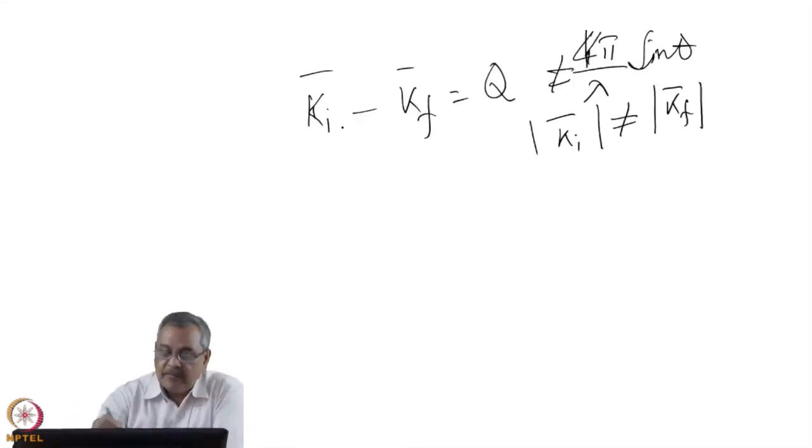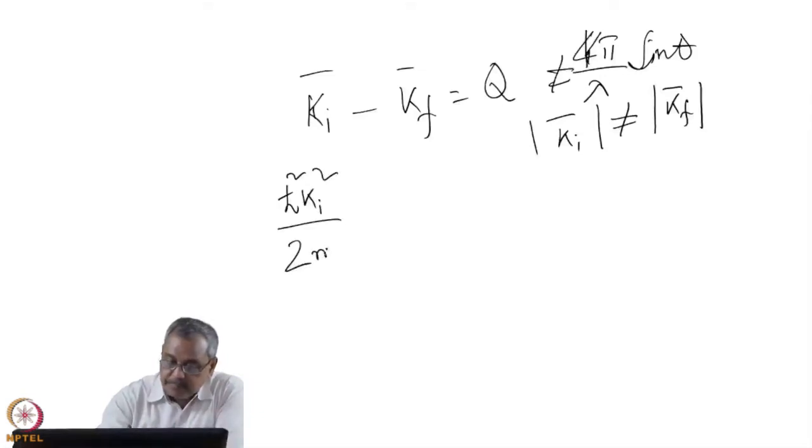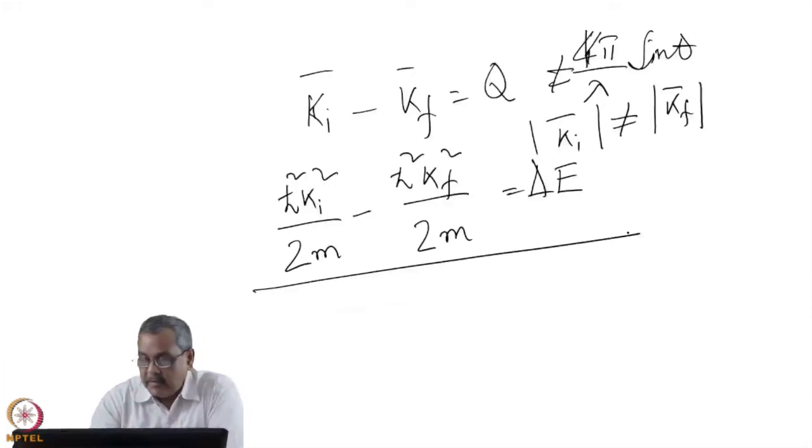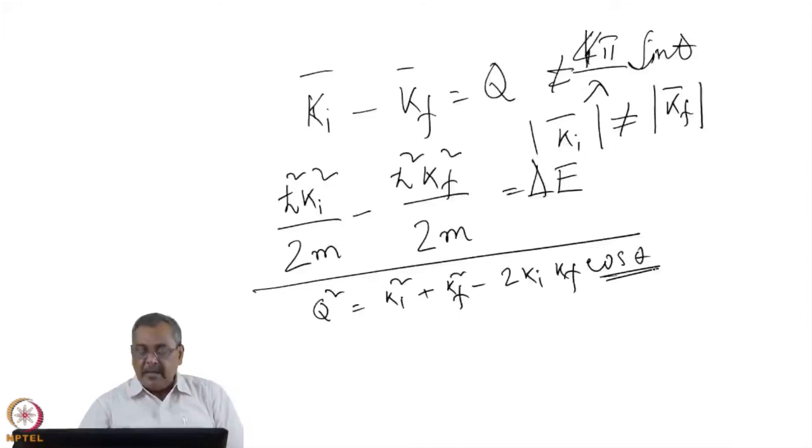This is ki and kf of different lengths, and ℏ²ki²/2m minus ℏ²kf²/2m is the energy difference, the energy transfer in the inelastic experiment. And q² equal to ki² plus kf² minus 2kikf cos θ, these are magnitudes if θ is the angle between ki and kf.